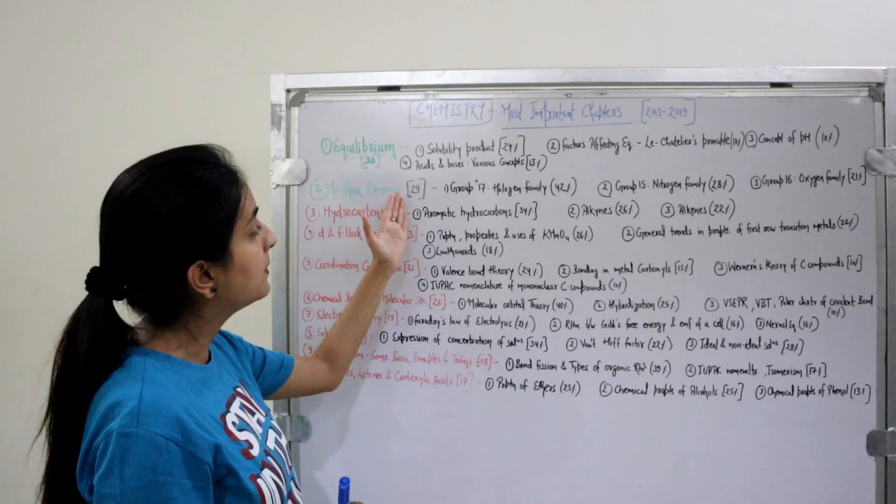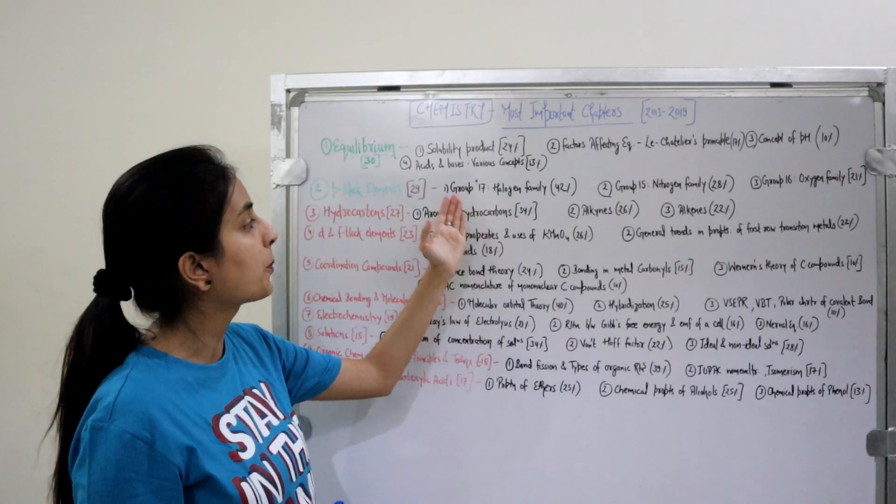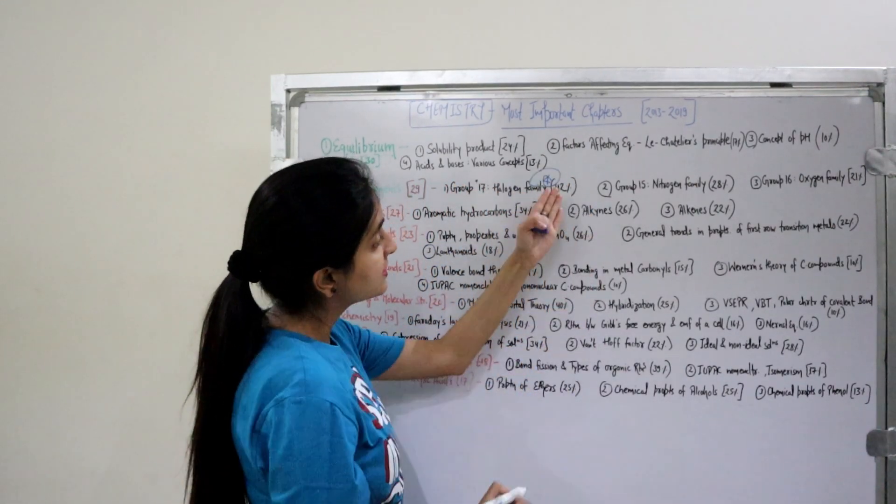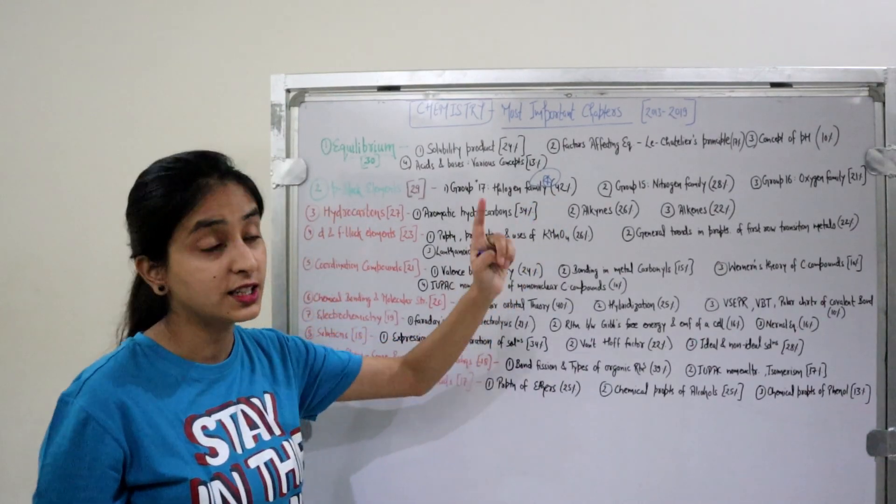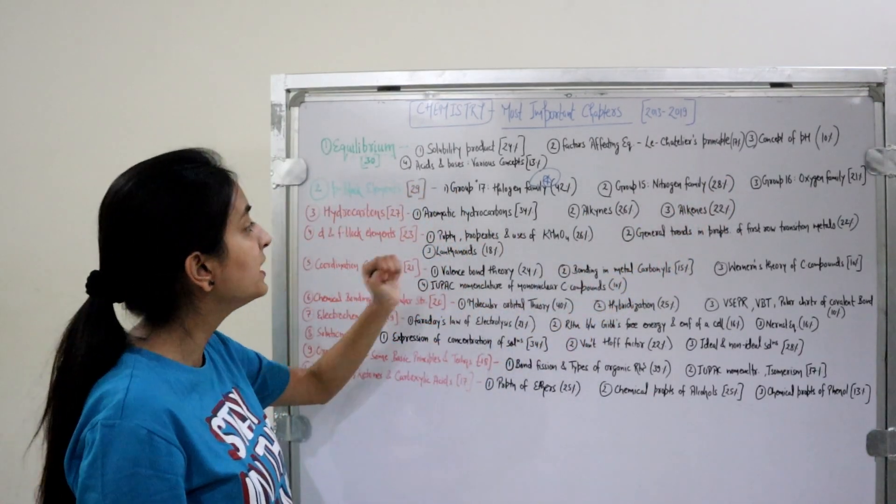Second important chapter: P-Block Elements—29 questions in the past 7 years. Most important topics: Group 17 Halogen Family (most important, 42% questions asked from this topic in past 7 years), Group 15 Nitrogen Family, and Group 16 Oxygen Family.